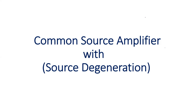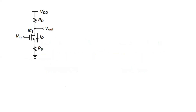So what is source degeneration? Previously the source node was tied to zero potential, but now the source node is not at zero potential. Instead, the source node is at the potential of ID·RS. This particular voltage drops across RS, and RS is what provides the non-zero source value.